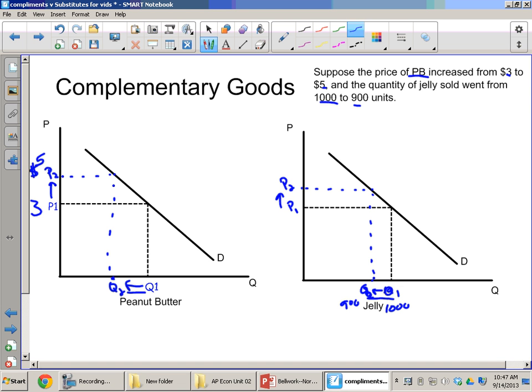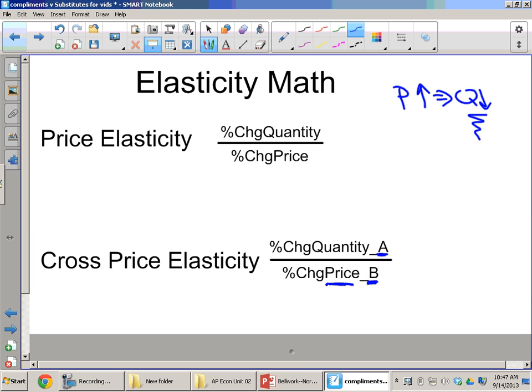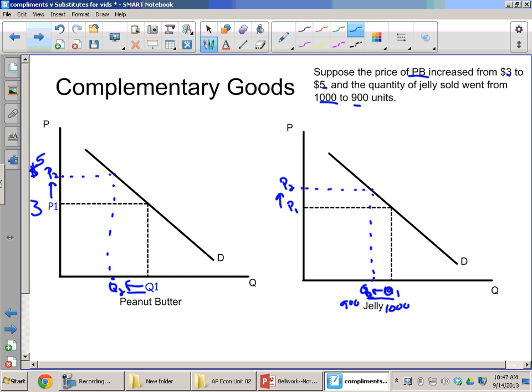So we know that that's the answer that we should see when we do the actual elasticity formula. Let's take a look at that formula again. Just a quick review. We're going to be looking at the percentage change in good A divided by the percentage change in the price of good B.